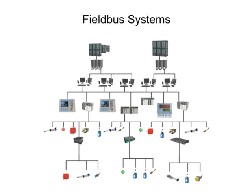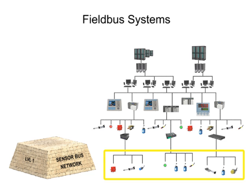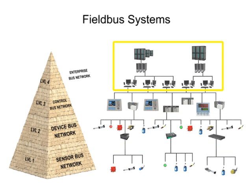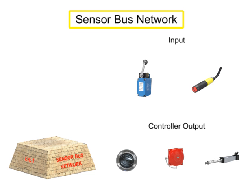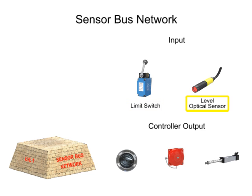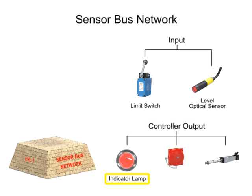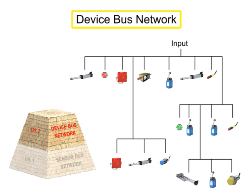Fieldbus industrial networks can be broken down into four levels, each with increasing levels of complexity. The most basic level is the sensorbus network. Sensorbus networks are the least complex networks developed for industrial application. In these networks, multiple basic field devices like limit switches or optical level sensors are connected to one network cable. The sensorbus network is also capable of transmitting output signals from the controller over one cable to indicator lamps, alarms, or other actuator devices.